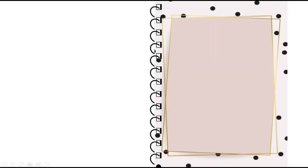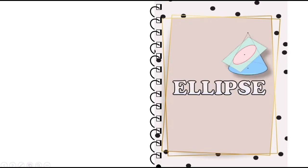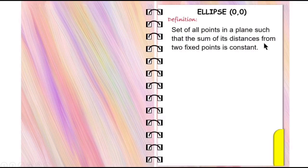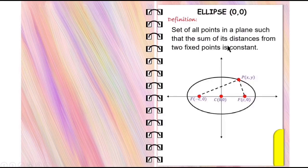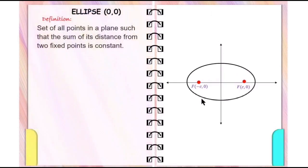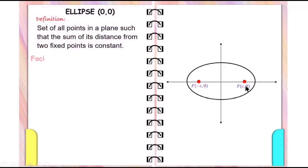Another type of conic section we shall talk about is the ellipse with center at the origin. An ellipse is the curve which results from slicing a double-napped cone by a plane which is parallel to no generator of the cone. It is a set of all points in a plane such that the sum of its distances from two fixed points is constant. The two fixed points are called the foci, the plural of focus.